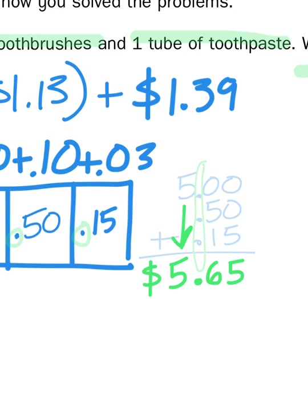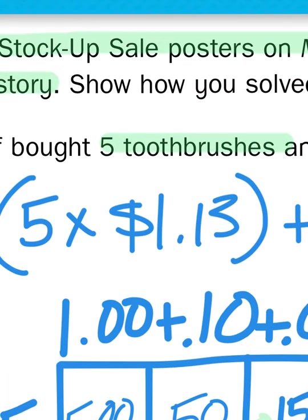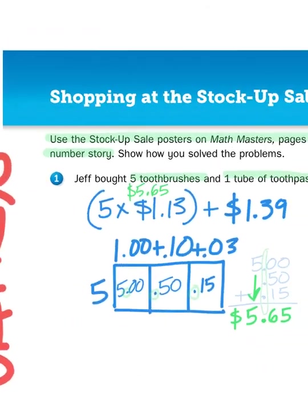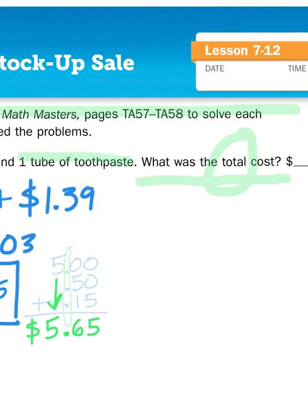Now that's just one half of this problem. I now have to take this amount, five dollars and sixty-five cents, and I'm going to add it to a dollar thirty-nine. That was the price of the other item. So let's line those two problems up just like we did with our partial products. Five dollars and sixty-five cents. Include that decimal. Plus a dollar thirty-nine.